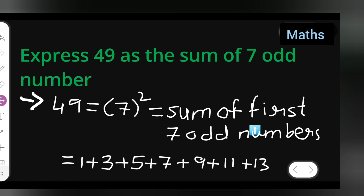The sum of the first 7 odd numbers is 49. I hope you have understood how to express 49 as the sum of 7 odd numbers. Thanks for watching.